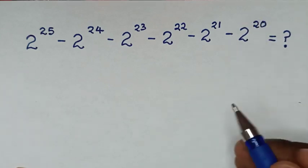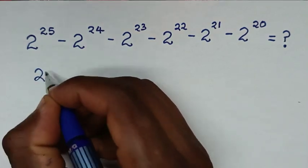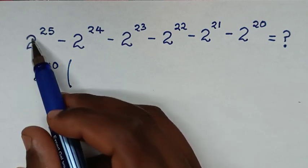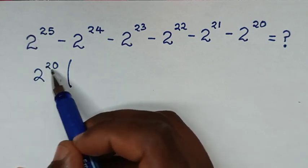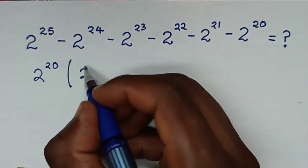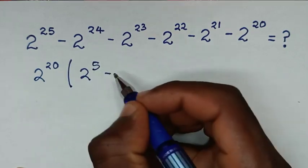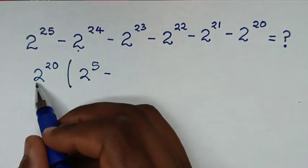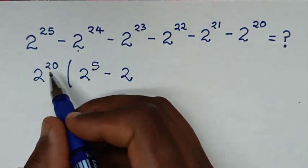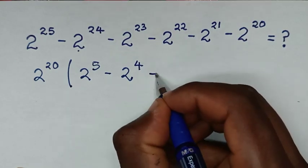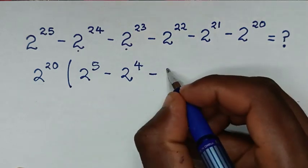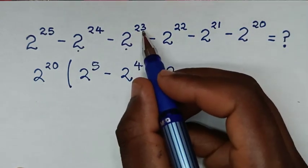So we'll take 2 power 20 out of the bracket. Then 2 power 25 divided by 2 power 20 is 2 power 5. Then minus: 2 power 24 divided by 2 power 20 is 2 power 4. Then minus: 2 power 23 divided by 2 power 20 is 2 power 3.